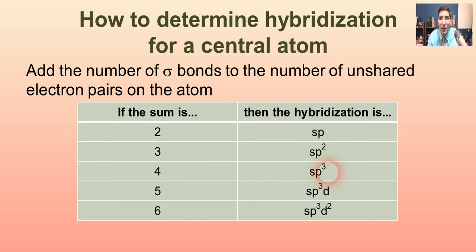Usually on the AP exam they will keep it to those three hybridizations. They will not go beyond SP3, but your chemistry teacher and your chemistry textbook may want you to go beyond that. If the number is five, it would be SP3D, because there are only three P orbitals. You've got to go on to D after that. If the sum is six, then the hybridization is SP3D2. So that's how you do hybridization. By the way, you have to learn that. That's not going to be given to you on the AP exam or test. You're going to have to know how to do that and have those learned.